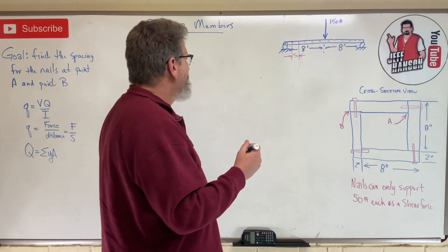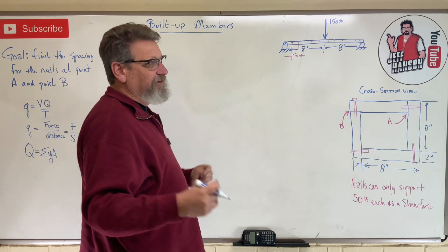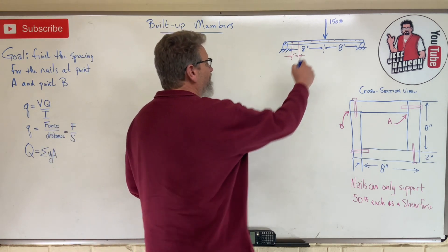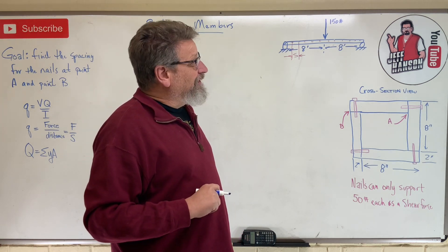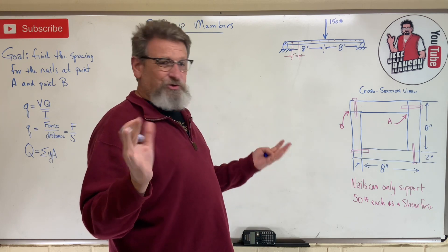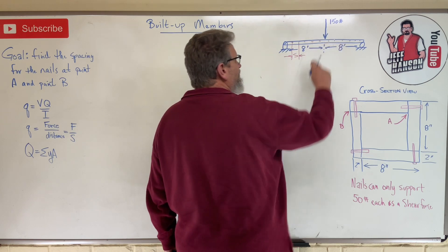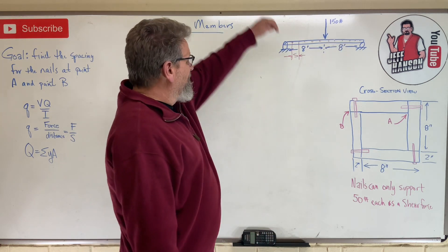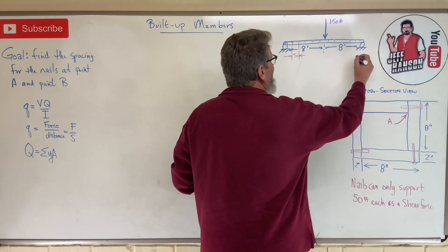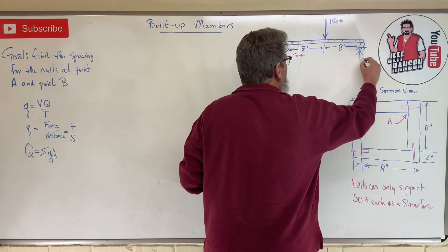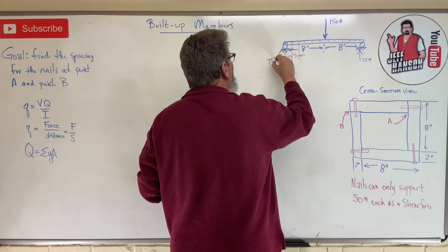First, for the VQ/I equation, what is V — the shear force? Let's just draw a quick shear diagram. This is an easy one: eight feet, eight feet, 150 pounds — like someone sitting right in the middle of a picnic bench. Half the weight goes to each support, so I have 75 pounds on each side.